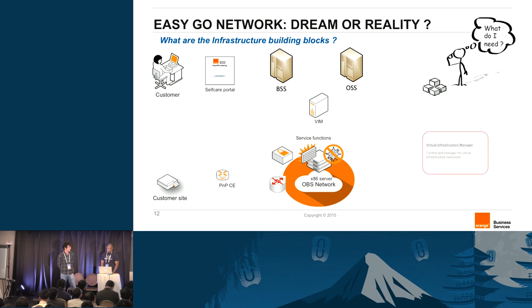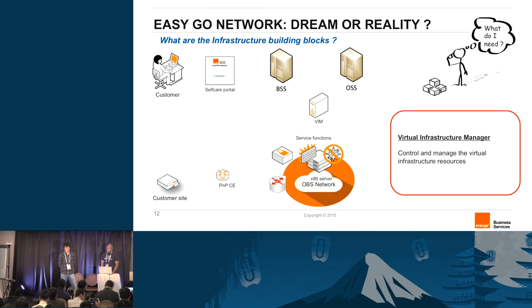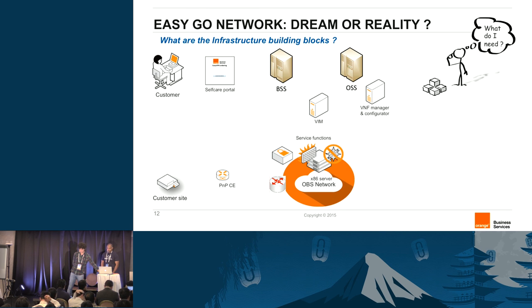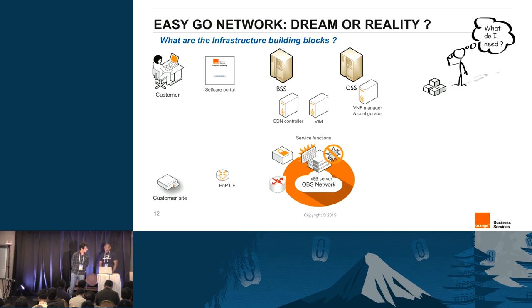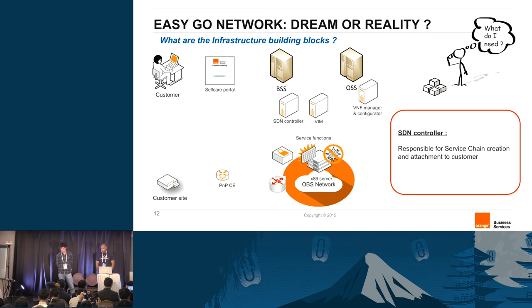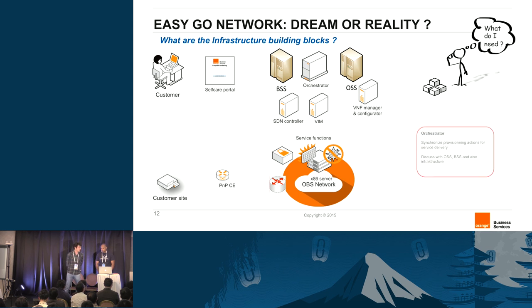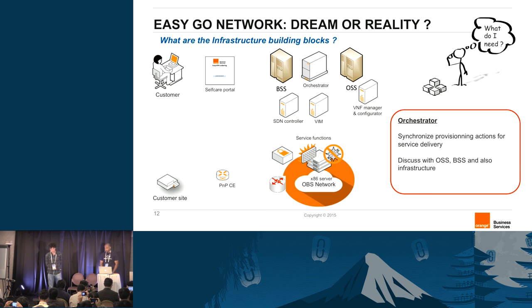We need to manage those resources via a virtual infrastructure manager. We also need the VNF manager and configurator to configure the network services and virtual appliances. We also need an SDN controller to manage the steering of traffic and the chaining between the different VNFs and virtual appliances. And finally, we need an orchestrator so that we can synchronize the provisioning between the OSS, the BSS, and the infrastructure.